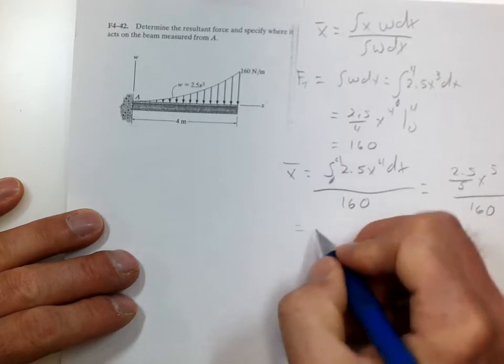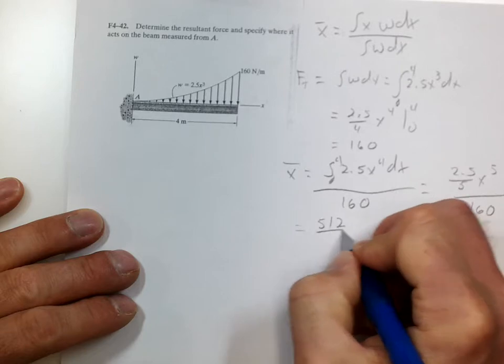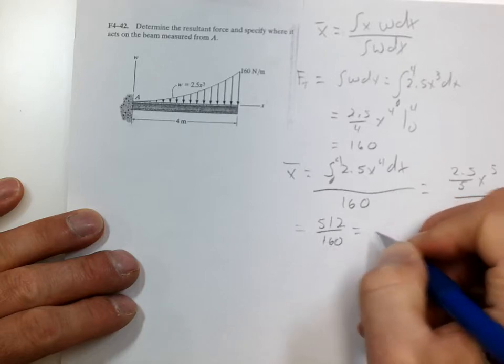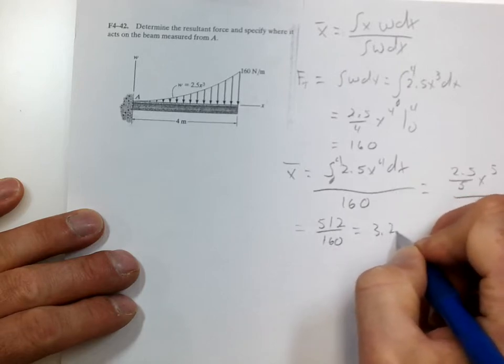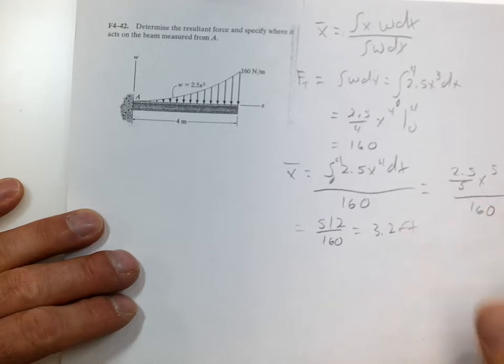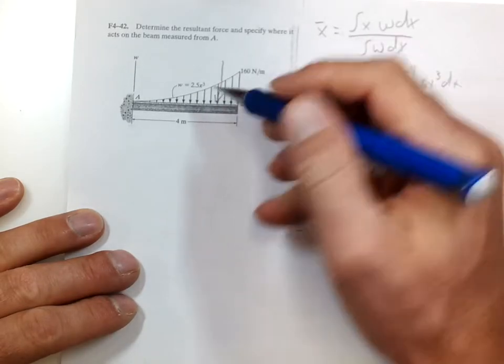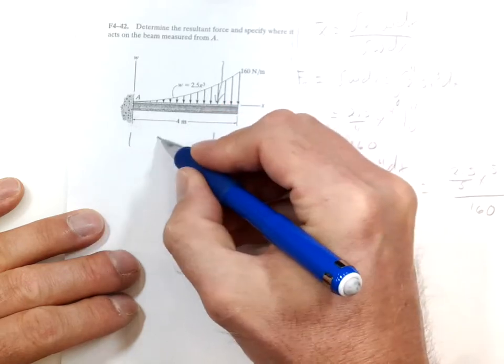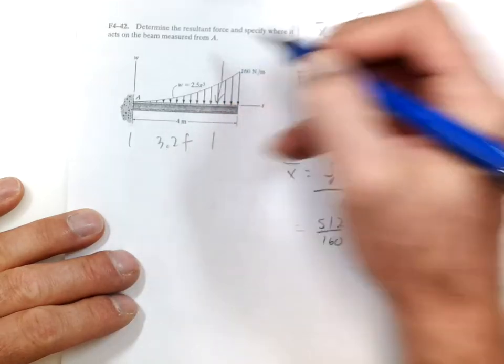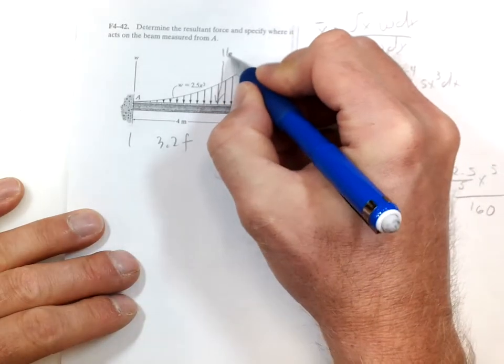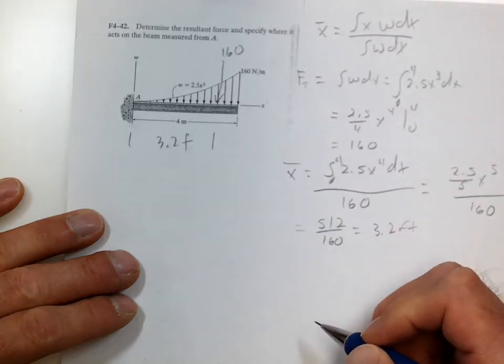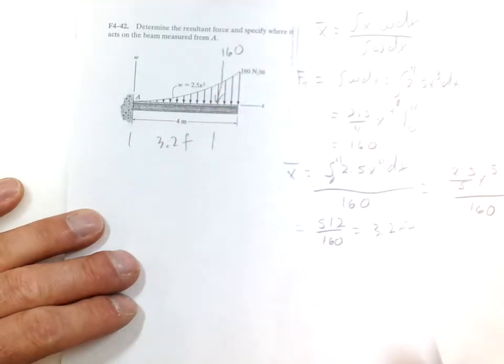And that equals 512 over 160, and that equals 3.2 feet. So it's x-bar here, 3.2 feet, and a total load of 160. And that looks good, about where it should be.